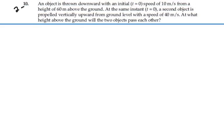Here's problem 2.10. An object is thrown downward with an initial t equals zero speed of 10 meters per second from a height of 60 meters above the ground. At the same instant, t equals zero, a second object is propelled vertically upward from the ground level with a speed of 40 meters per second. At what height above the ground will the two objects pass each other?